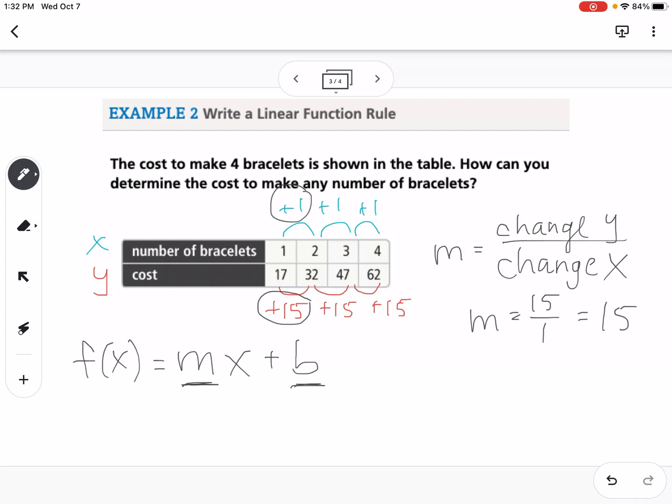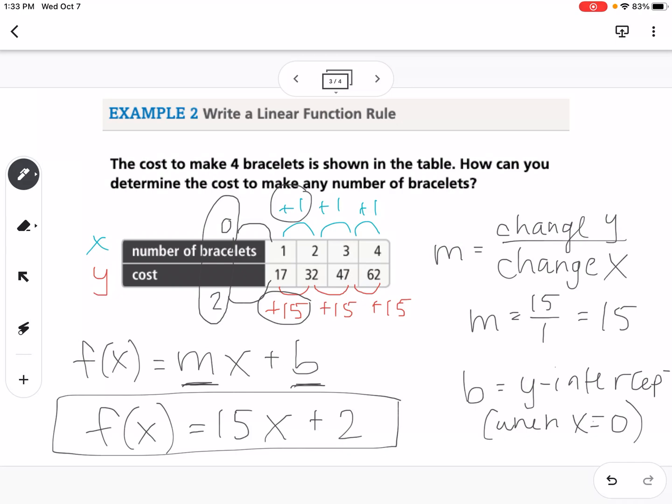Now b, we have to think a little bit more creatively. So b is my y-intercept. And our y-intercept occurs when x is 0. So if we go back a step to 0, what would we get when we go back a step in our y's? If I go back 15 from 17, I'm going to end up at 2, which means that my y-intercept is at 2. So my function would be f of x equals 15 is my m value, x plus 2. So there's my function.